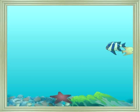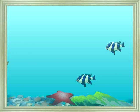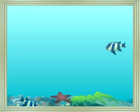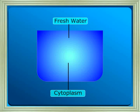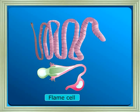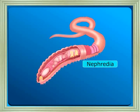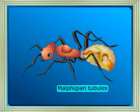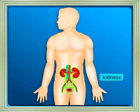Due to this constant inflow of water, the cell may enlarge and burst. Animals have developed mechanisms to remove excess water — either through contractile vacuoles as in protozoans, flame cells as in helminths, nephridia in annelids, malpighian tubules in arthropods, or kidneys in higher vertebrates.